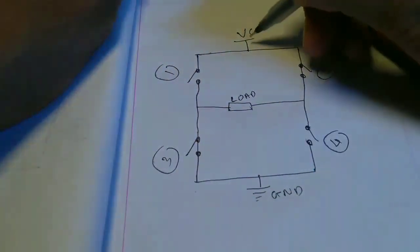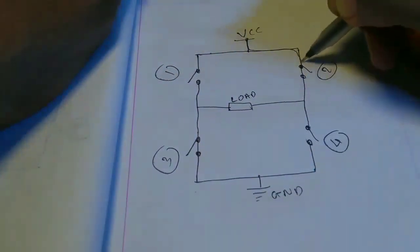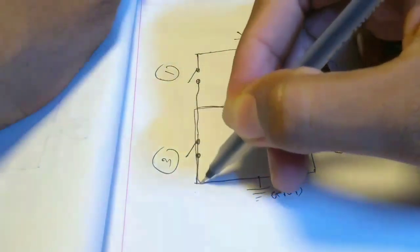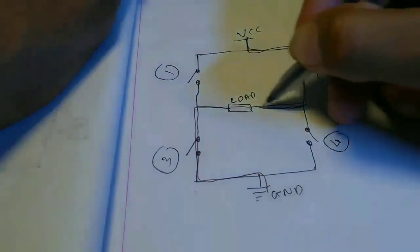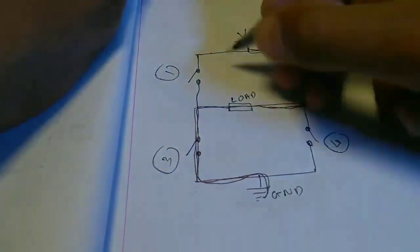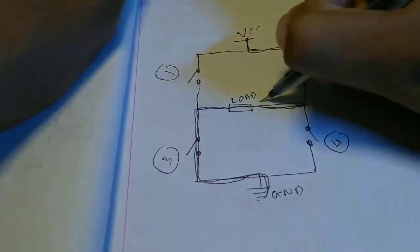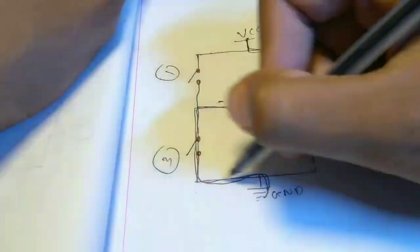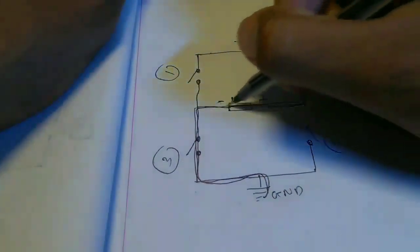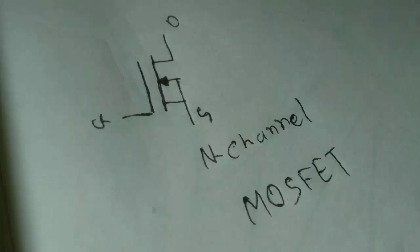If we turn on switch two and three, current will flow in this direction. In this case the left side of the load is negative and the right side is positive, therefore the polarity is changed. We are using N-channel MOSFETs as switches because MOSFETs can handle high power.